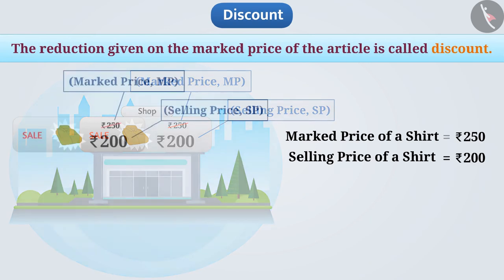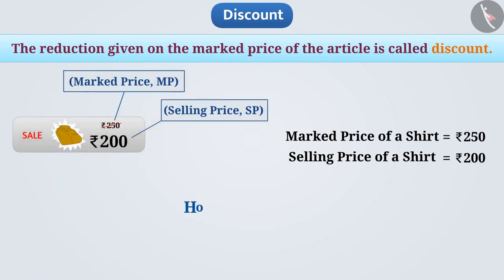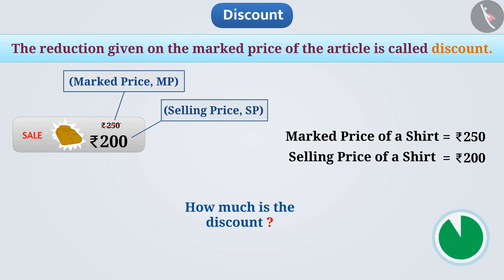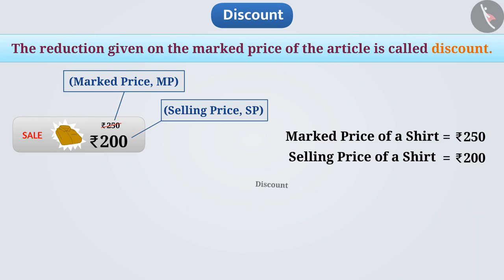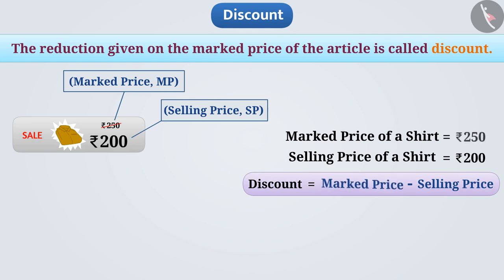Can you tell us how much is the discount here? We find the discount by subtracting the selling price from the marked price. In this case, discount = marked price (250 rupees) minus selling price (200 rupees) = 50 rupees.